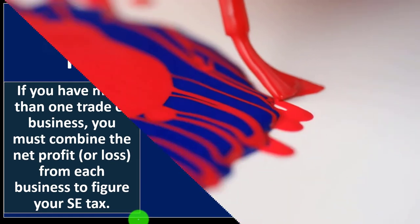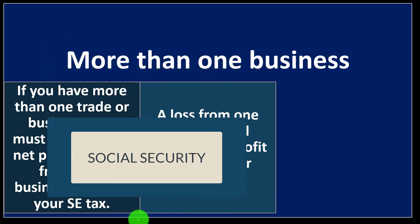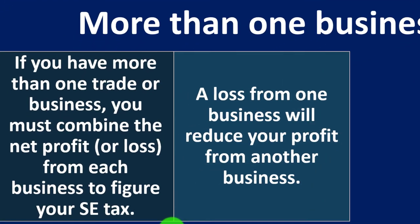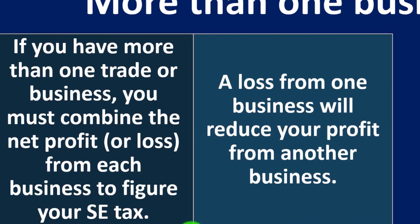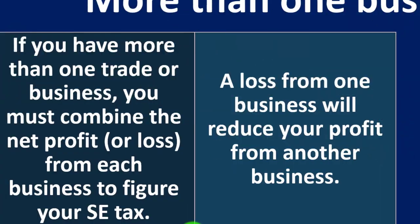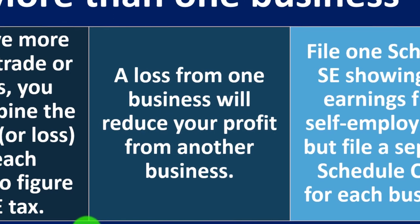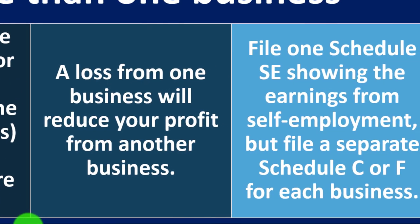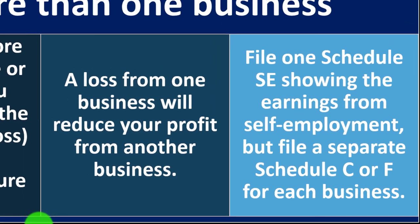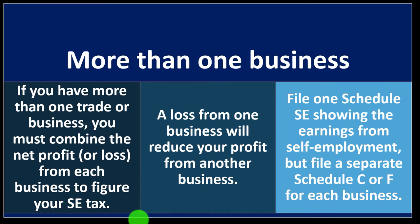If you have more than one trade or business, you must combine the net profit or loss from each business to figure your self-employment tax, because of caps like the Social Security wage base. If you have a loss from one business, it will reduce your profit from another business. File one Schedule SE showing the combined earnings from self-employment, but file a separate Schedule C or F for each business.